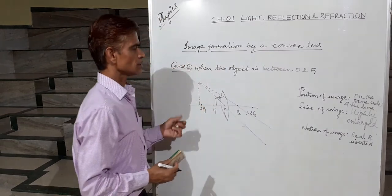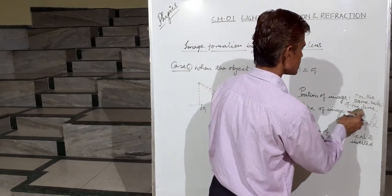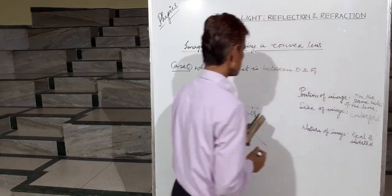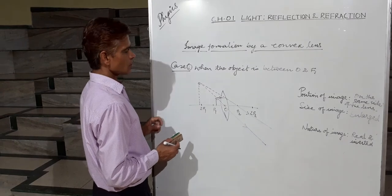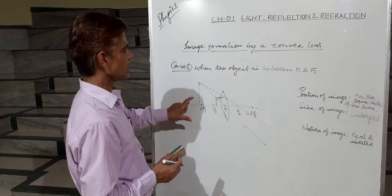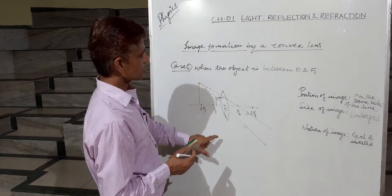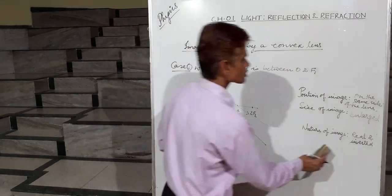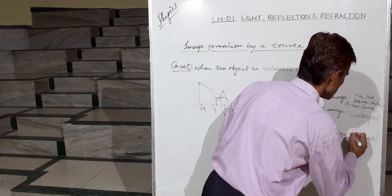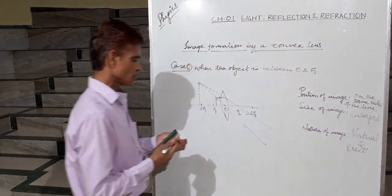The image is larger than the object, so an enlarged image is formed. Virtual rays are meeting, so a virtual image is formed. The image is above the principal axis, so it is erect. Thus a virtual and erect image is formed.